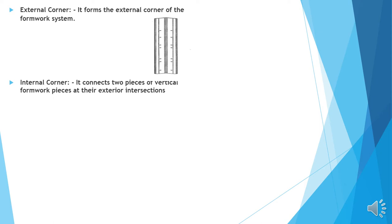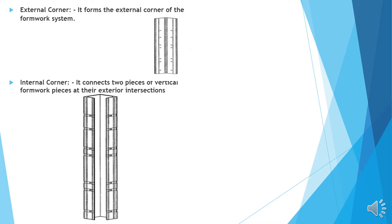Internal corner: It connects two pieces of vertical formwork pieces at their exterior intersections, that is the external wall to the internal wall. This is the image of the internal corner.